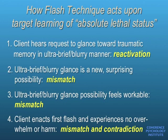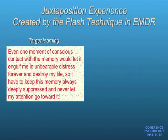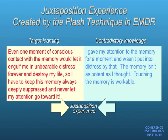I touched that memory and wasn't harmed by touching it. Now, the activated expectation of absolute lethality and the disconfirmation of that expectation are in the same field of awareness, in juxtaposition. That juxtaposition is the biggest, strongest mismatch yet. And as I reviewed earlier, mismatch during reactivation is exactly what unlocks the neural encoding of the target learning, launching the memory reconsolidation process. Now, the destabilized target learning of absolute lethal status is available to being fundamentally unlearned, nullified, and replaced by new contradictory learning.